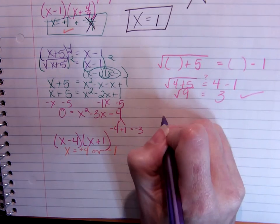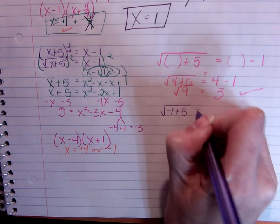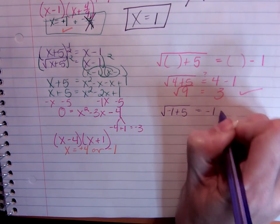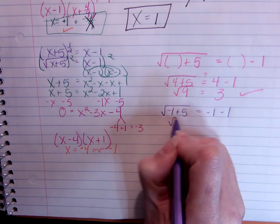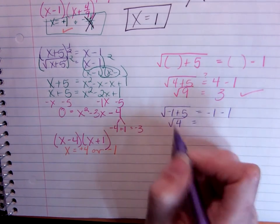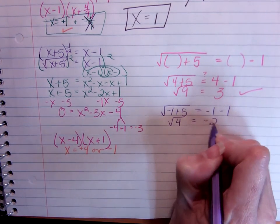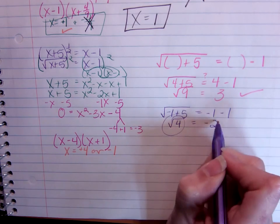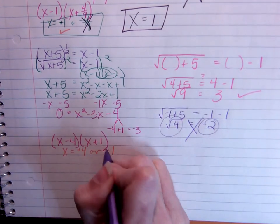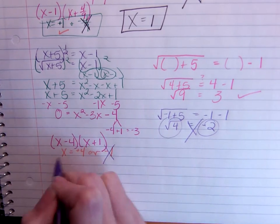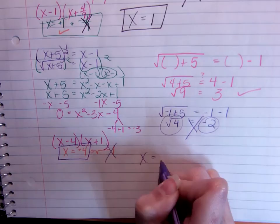Now let's check our negative 1. Negative 1 plus 5, is that equal to negative 1 minus 1. Here I've got the square root of 4, okay to work with, but negative 1 minus 1 is negative 2. I've ended up with the square root equal to a negative answer, which is not okay. I can't use the negative 1. My only solution, x equals positive 4.